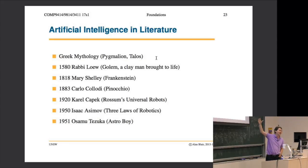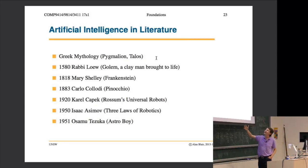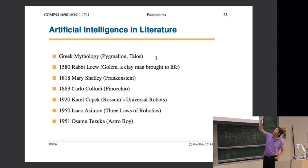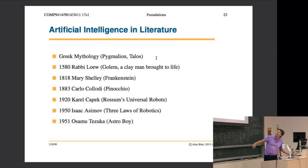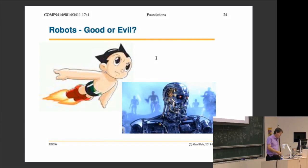Frankenstein - we all know what happened in the end. Pinocchio got into trouble and turned into a donkey. Rossum's robots took away all the jobs and destroyed society. Something bad happened with Isaac Asimov - all these common bad themes until you get to Astro Boy. There's modern movies from the last couple of years that pick up on these themes.